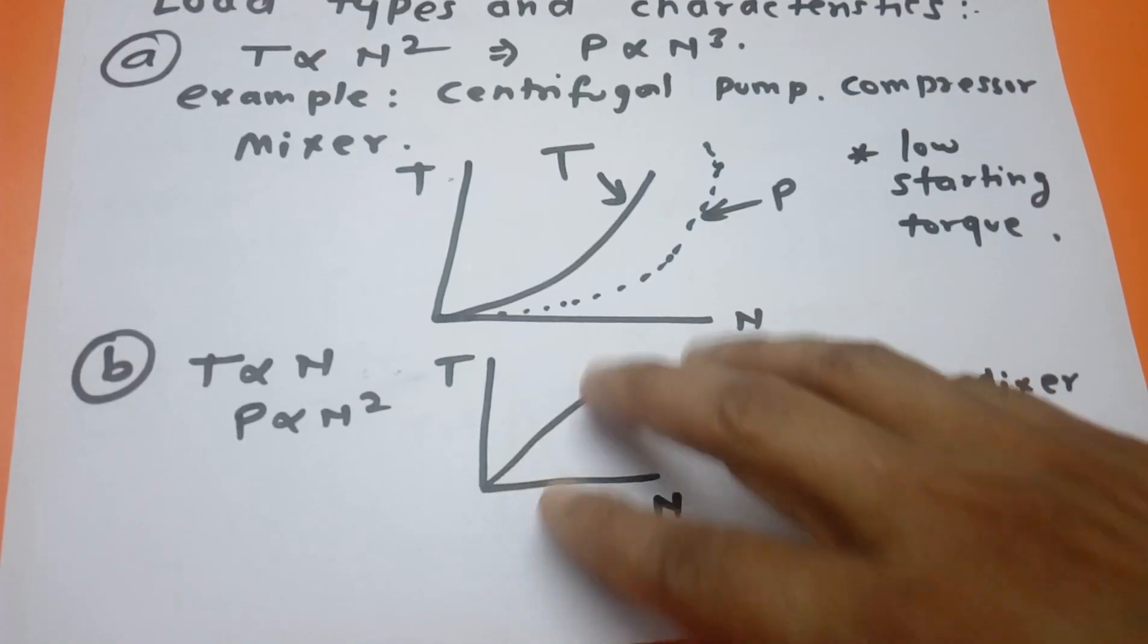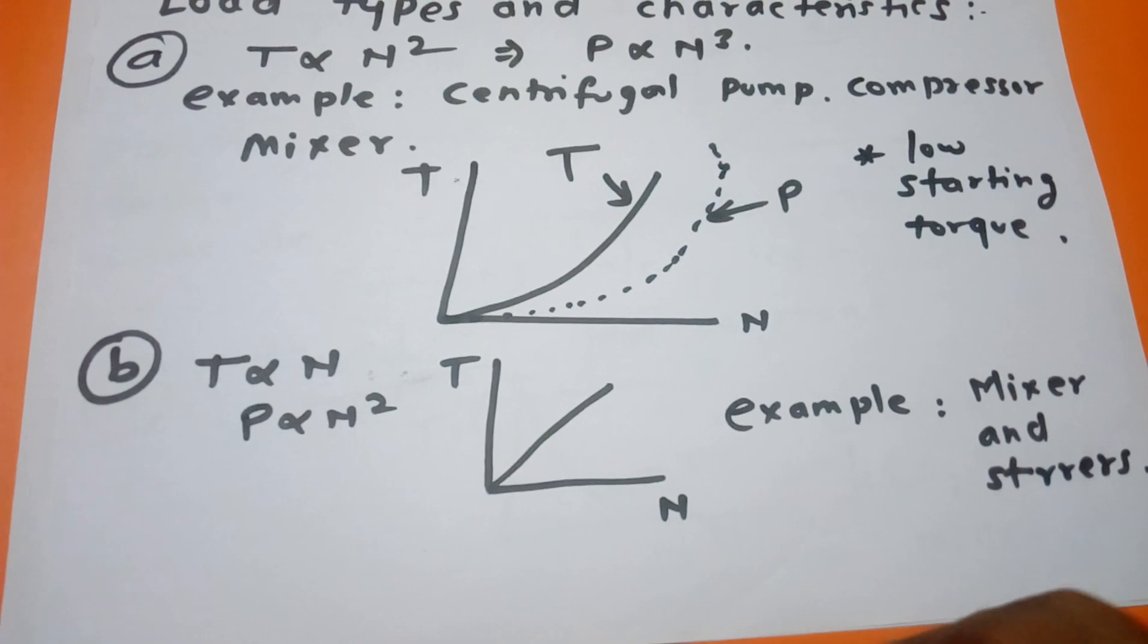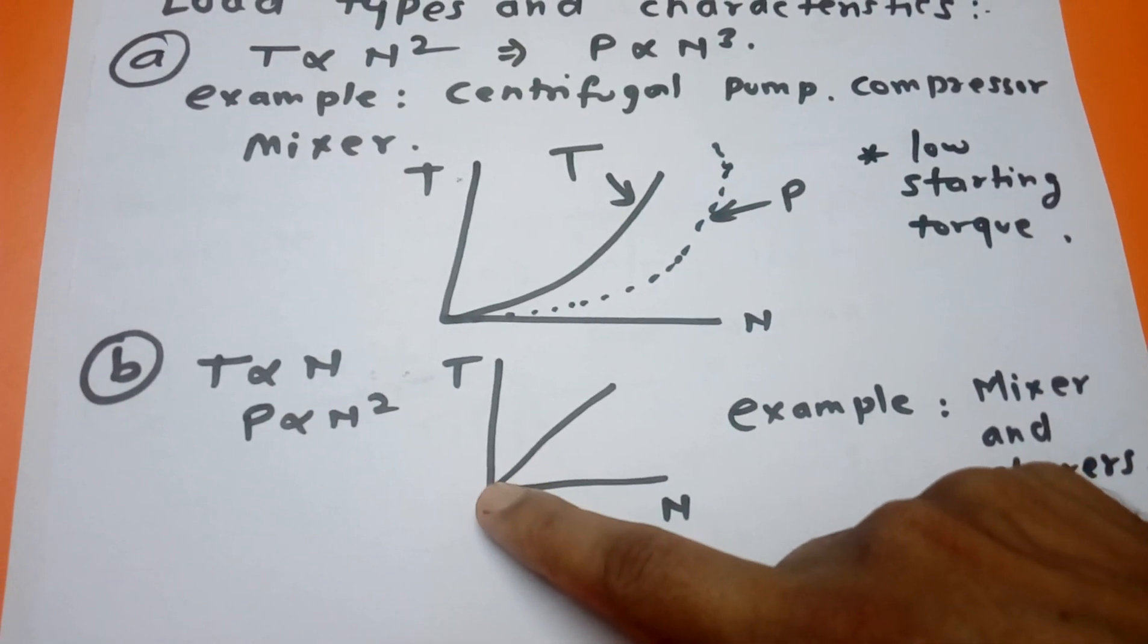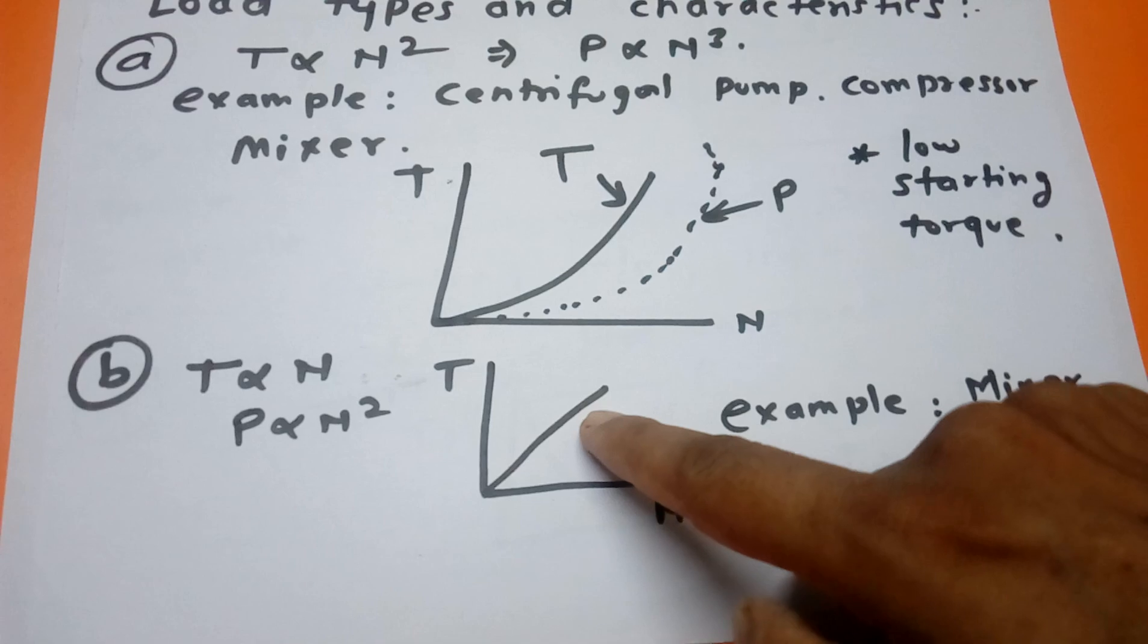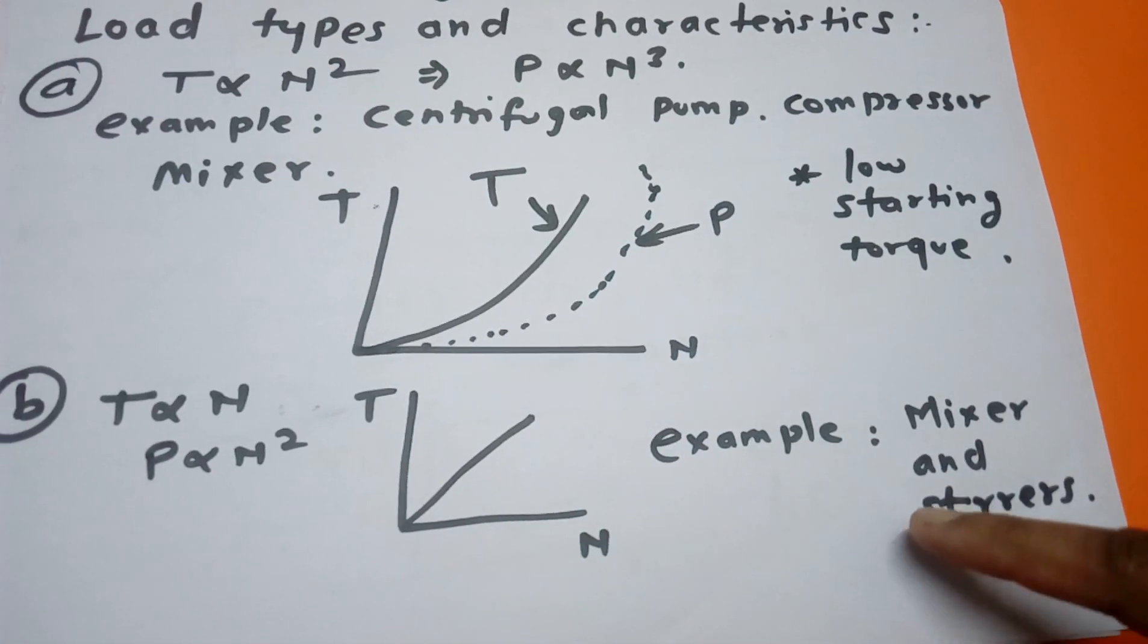Similarly, power is also the same. Starting power is less and power starts to increase more. The next type of load follows the characteristic of linear. This type of characteristic when speed is zero, torque is also zero.